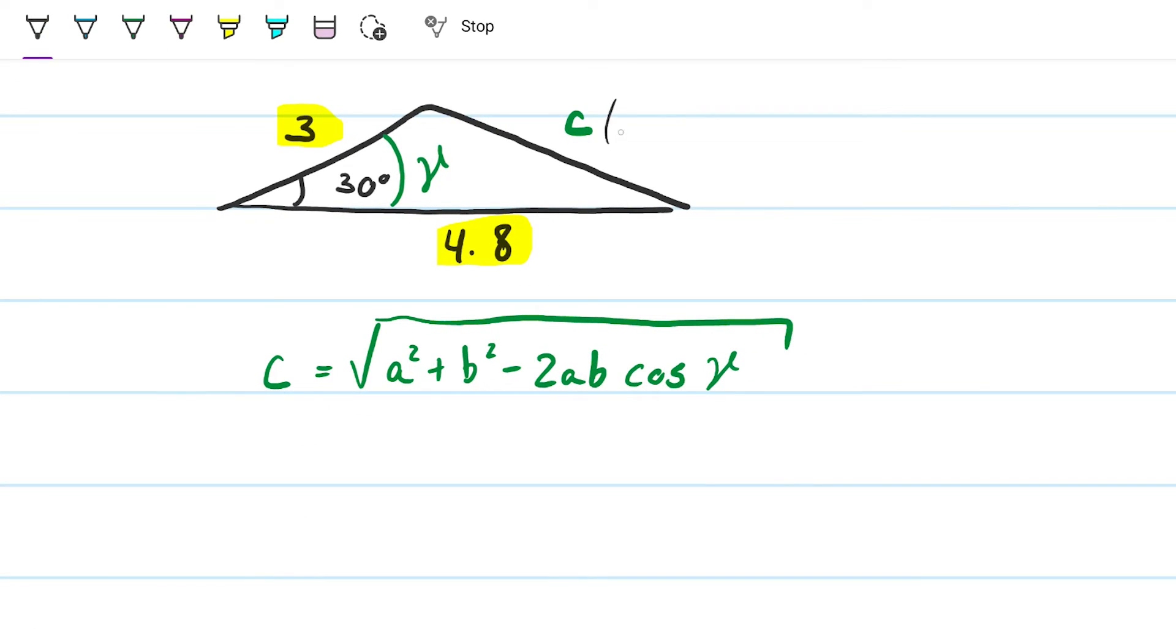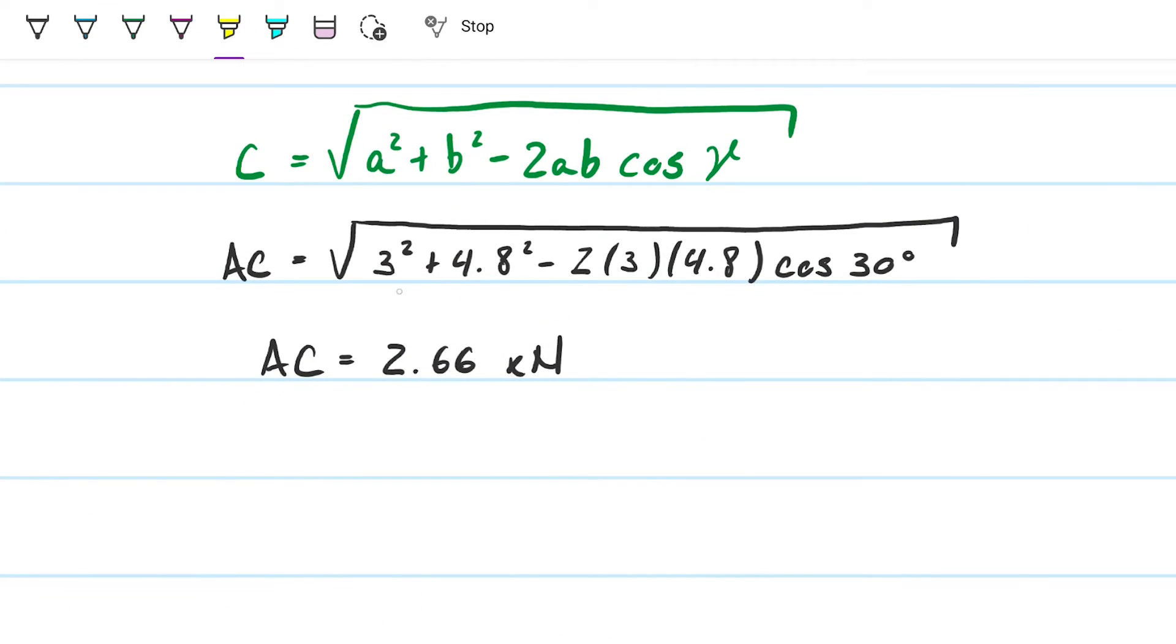So translating that to our problem, this is AC. My force AC equals to the square root of 3 squared plus 4.8 squared minus 2 times 3 times 4.8 times the cosine of 30 degrees. Take the square root of all that, and I get that AC equals 2.66 kilonewtons. Obviously the units has to be the same kilonewtons. So this is what is the force required to be able to have a resultant of 4.8 kilonewtons.